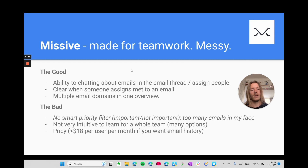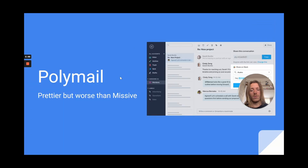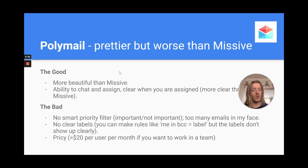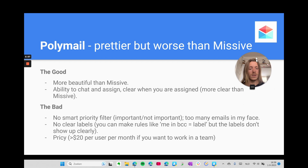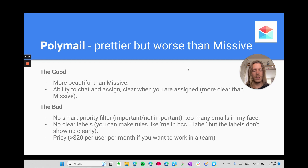Polymail is prettier but worse than Missive in many ways. It's similar in that you can chat and assign emails, and the assignment notification is clear. But again there's no smart priority filter so too many emails end up in your face. The labels aren't clear enough — you can make rules to add labels but they're not shown clearly enough for me. And it's even pricier than Missive if you want to use it for a team, so also not the best for me.